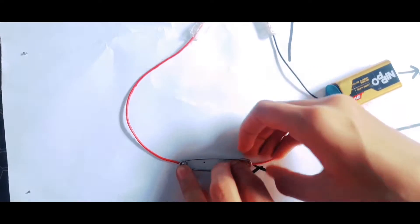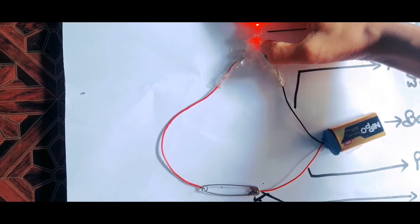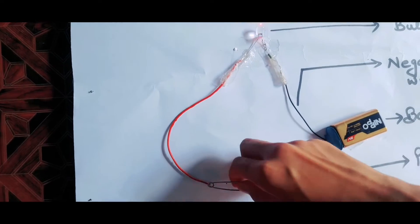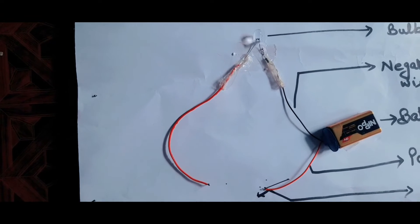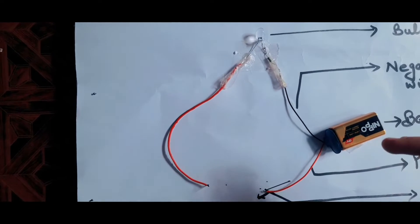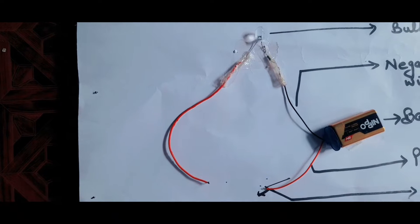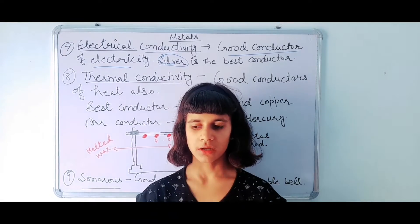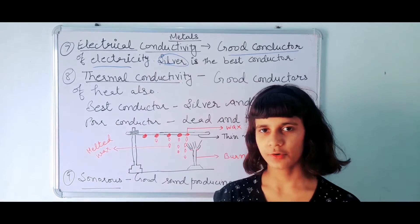The bulb is glowing. Why is the bulb glowing? Because metals are good conductors of electricity, and this pin works as a switch also. You can make this electric circuit at home with waste materials. From this activity, our conclusion is that metals are good conductors of electricity.